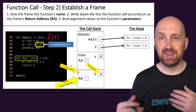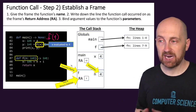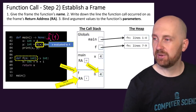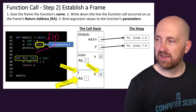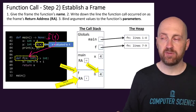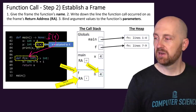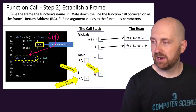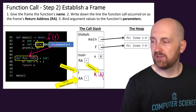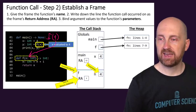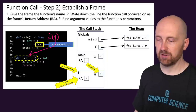This time around, we actually do have parameter passing. We have the argument value 4 that needs to be assigned to the parameter n. So when a function call involves parameters, we set up on that function call's frame the parameter n being assigned the argument value 4. That's how the parameter passing step works.